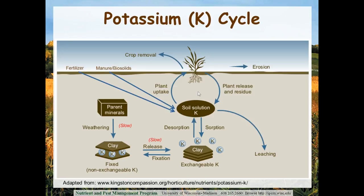Losses of potassium from the cycle include crop removal and potential loss if we're losing fertile topsoil through erosion or runoff. Just like phosphorus, potassium is taken up by the plant in the dissolved or soluble form. Soluble levels of soil test potassium are relatively low relative to overall concentrations in the soil profile. Parent materials — bedrock and minerals such as mica and feldspars — over time and very slowly release potassium.